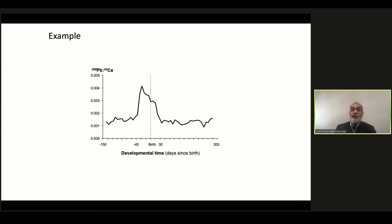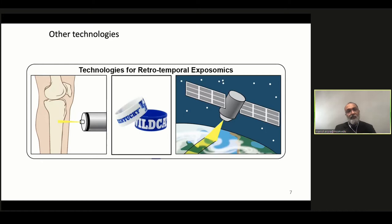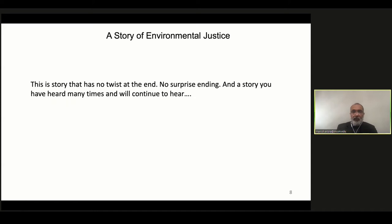I've explained this technology mainly to show how we are applying it to studies of environmental justice. I also want to acknowledge that there are many other technologies being used by colleagues — for example, the bone biomarker, silicon wristbands, and satellite biomonitoring or remote sensing.